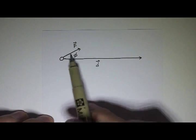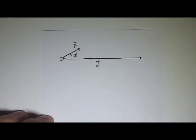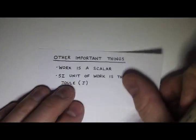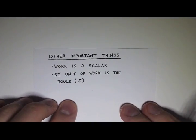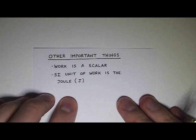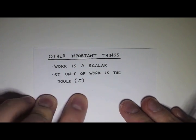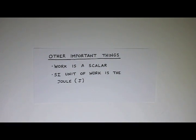A couple other important things. Work is a scalar, so it's not a vector, it's just a scalar. It does not have a direction, just a magnitude. However, work can be negative. It is possible to have negative work.